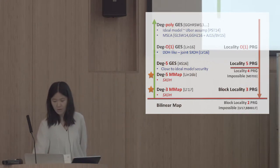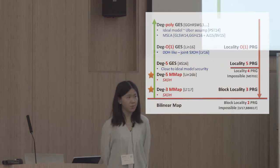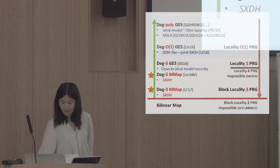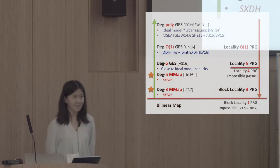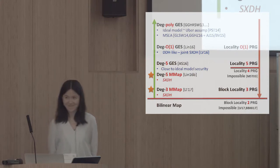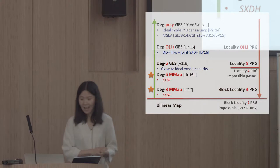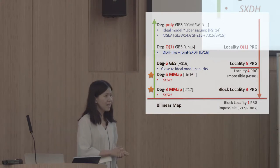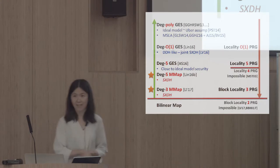At this point, we hit a wall: locality-4 PRGs with polynomial stretch do not exist. In a very recent result with Stefano, we managed to circumvent this lower bound and get the degree down to 3 by relying on a more relaxed notion of locality called blockwise locality.